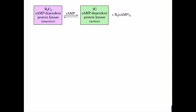Cyclic AMP-dependent protein kinase (cyclic APK) is activated by the binding of cyclic AMP to the regulatory subunit R, which causes the catalytic subunit C to be released from the complex into its monomeric active form.